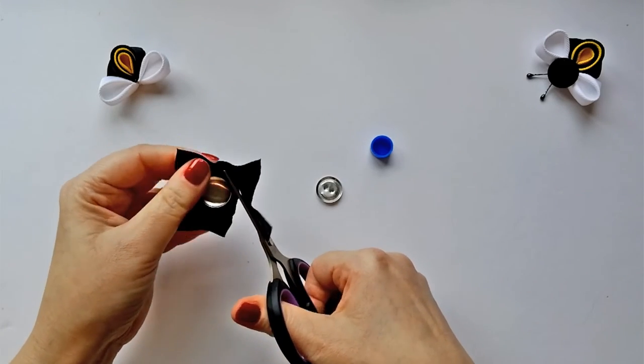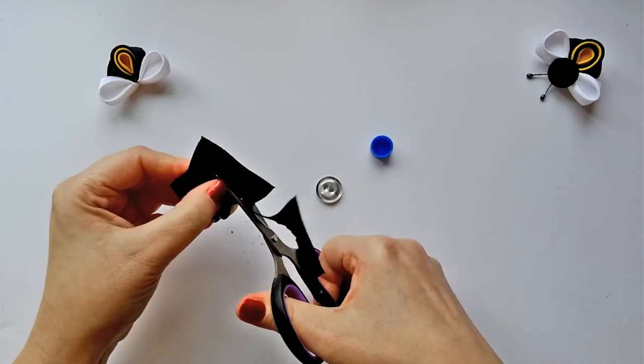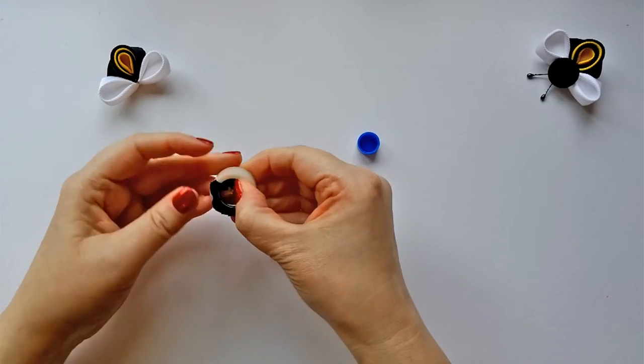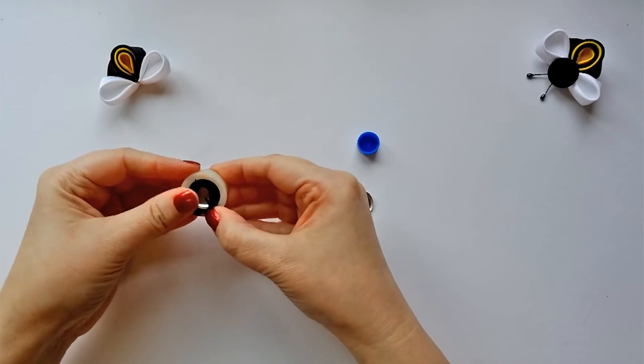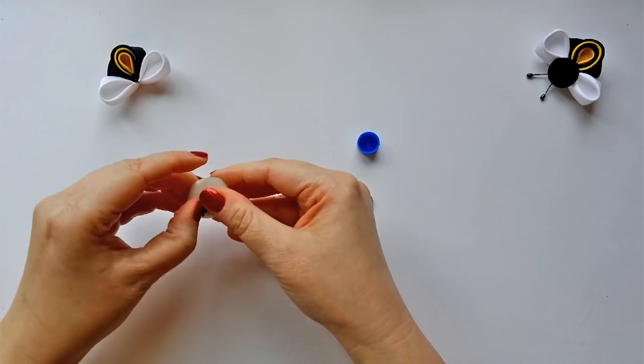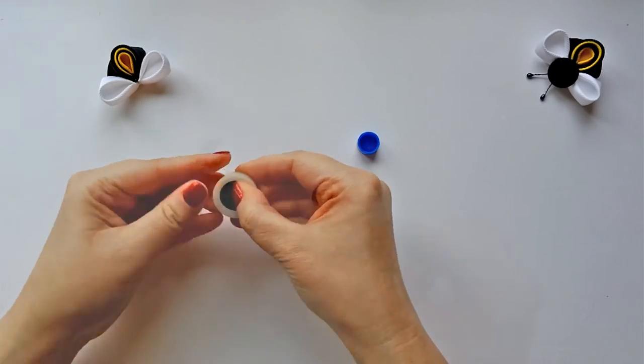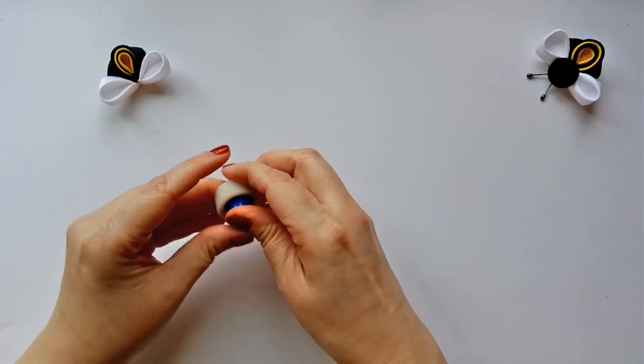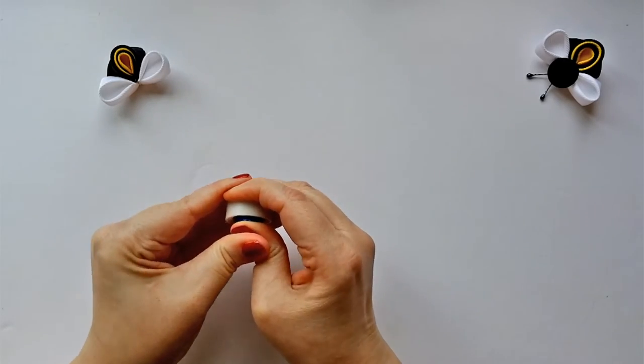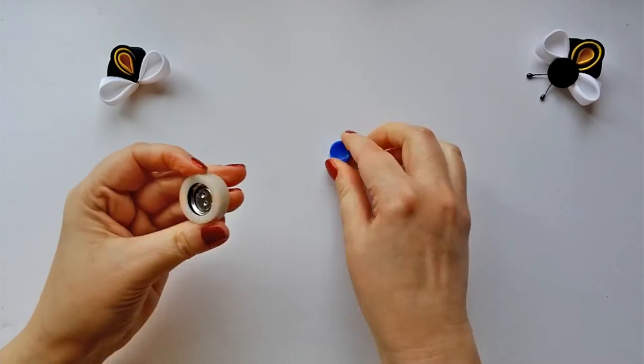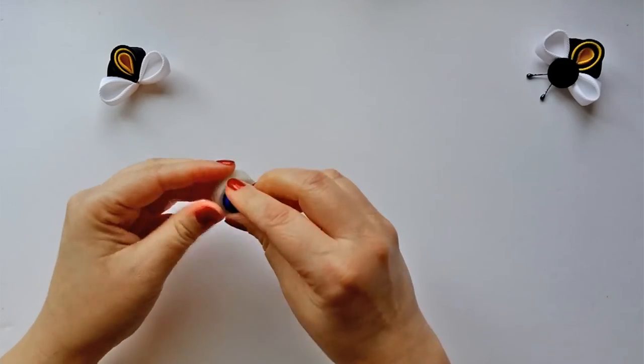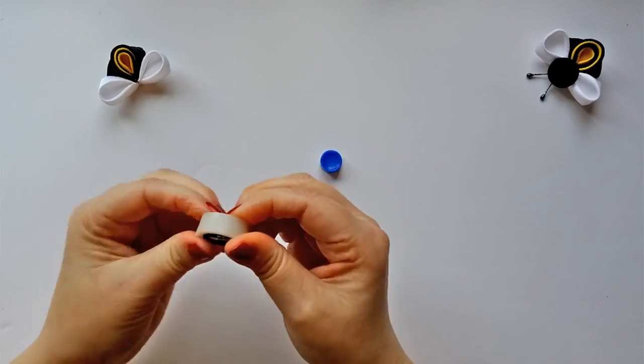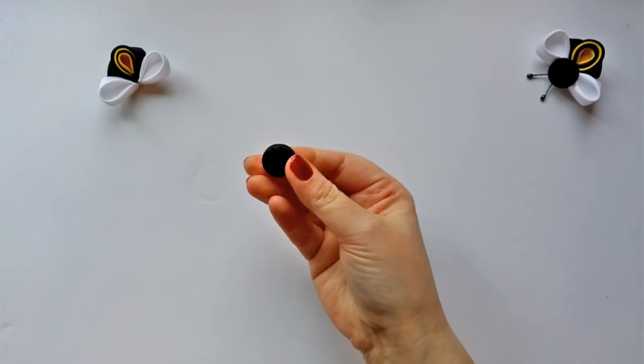Then trim off any excess ribbon, leaving just enough to get tucked in. Fold all of that excess ribbon down into the top of the button, and use the bottom of the tool to snap the bottom of the button into place. And that's the head for your bumblebee.